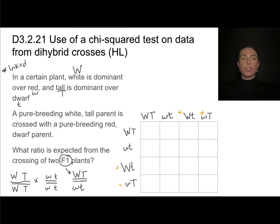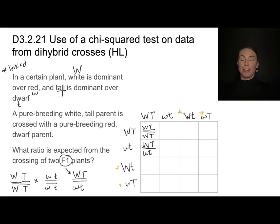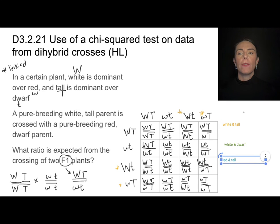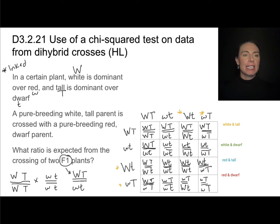When filling in your Punnett square with linked genes, you must write the genotypes in linked notation — the genotype from one parent written on top with two lines, then the genotype from the other parental gamete below. Once you've filled in the Punnett square, go through and count the different phenotypes just like a regular dihybrid cross. The options are: white and tall, white and dwarf, red and tall, or red and dwarf. Identify each combination and make a tally mark.